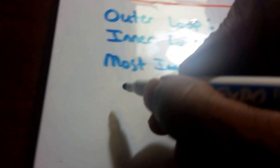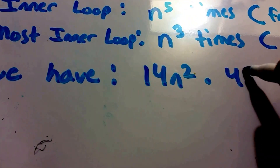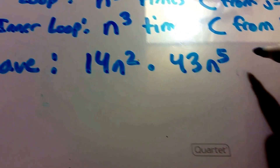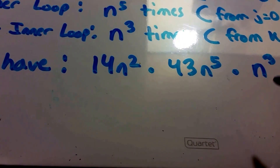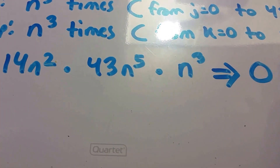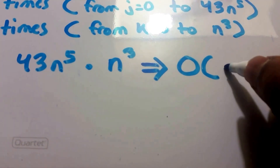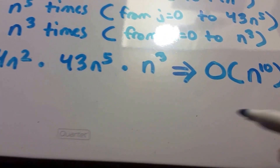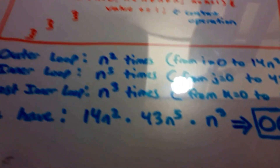So what we have is 14n squared times 43n to the fifth times n cubed. And this implies this is big O of — let's see, 2 plus 5 is 7, plus 3 is 10 — so this is big O of n to the tenth power, because the constants don't matter. And that's our answer without using summations, just by looking at it.